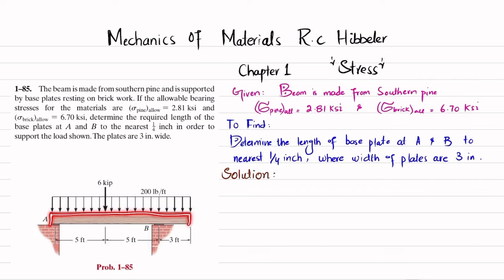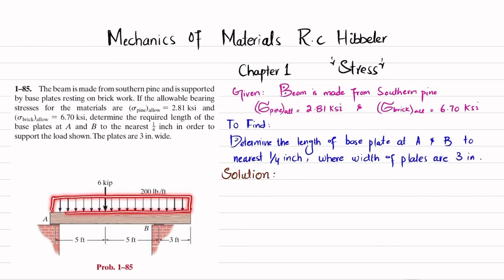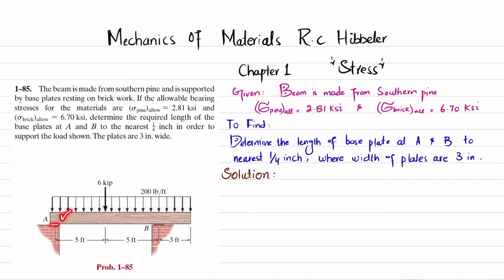You can see the beam is made of southern pine with a uniformly distributed load of 200 pounds per foot over the whole length. There is a 6-kip load at 5 feet from point A, and there is a base plate between the beam and the brickwork. You have to find the length of these base plates.